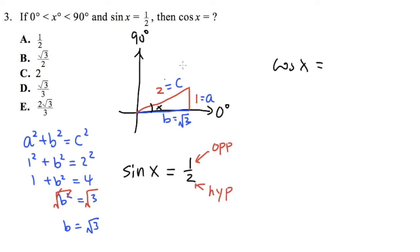Based on this picture, cosine of x is going to be the adjacent side, which is √3. This is the adjacent side right here. Adjacent side, which is √3, over the hypotenuse, which is 2. As you can see, cosine is the adjacent side over the hypotenuse. We have to remember these things really well. In the end, you see we got our answer: cos x = √3/2. That is choice B.